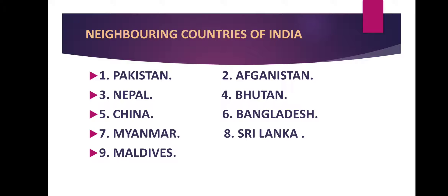On the next slide there is a colored map so it is easier for you to understand. You can see all the neighbors colored differently: Afghanistan, Pakistan, Nepal, Bhutan, China, Bangladesh, Myanmar, Maldives, and Sri Lanka. It is a colorful map showing everything covered in the previous slide.